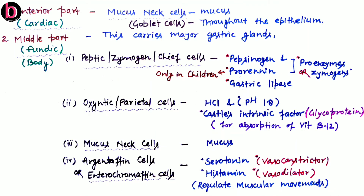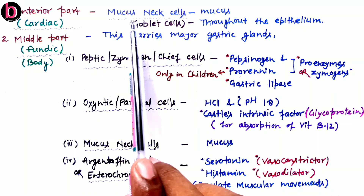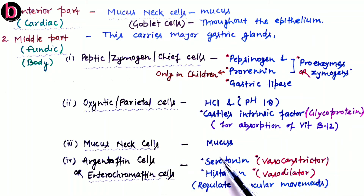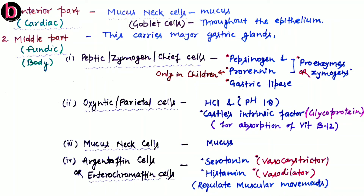The third cell type in the middle part is mucus neck cells, which function the same way — secreting mucus for protection. The fourth is argentaffin cells, also known as enterochromaffin cells. They secrete serotonin, a vasoconstrictor that causes constriction of stomach muscles, and histamine, a vasodilator that causes dilation of stomach muscles. Both are responsible for muscular movement of the stomach.